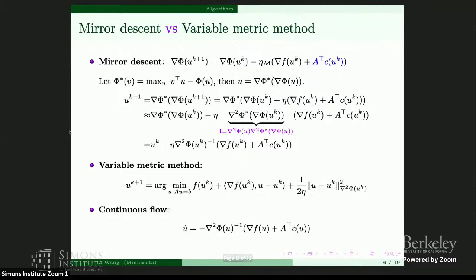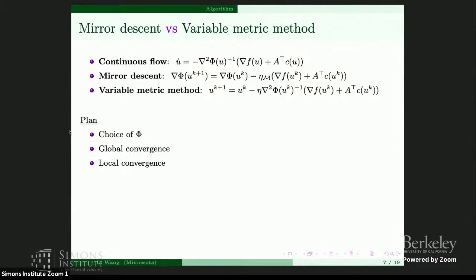What's more interesting is that if we send eta — the iteration step — to zero, they arrive at the same continuous flow. So in summary, we start from the continuous flow and view mirror descent and the variable metric methods as first-order discretizations of this continuous flow. One of the most popular variable metric methods is Newton's method because of its fast convergence, so it's natural to think that if phi can include some information of f, we can get faster convergence.